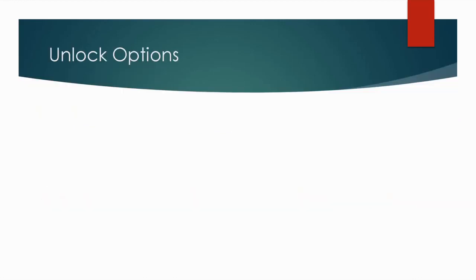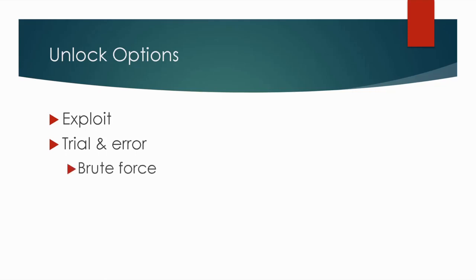Now let's continue with the possibilities for how to unlock such a protected smartphone. There are a few. The first one is using an exploit — an exploit that bypasses lock screen protection or escalates privileges to root. Then using trial and error, which could be automated into a brute force. And the last one: if you don't care about the data, you can factory reset from recovery. There are not many options, not many possibilities.